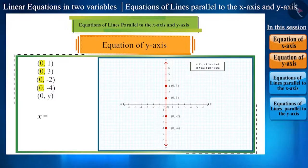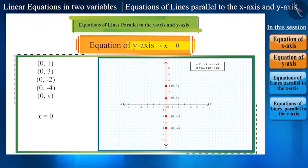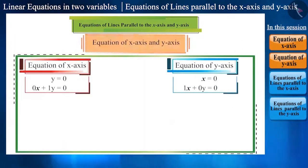That is, x = 0, which itself is the equation of y-axis. We can write this as 1x + 0y = 0. We got two equations which represent two lines: the x-axis and the y-axis.